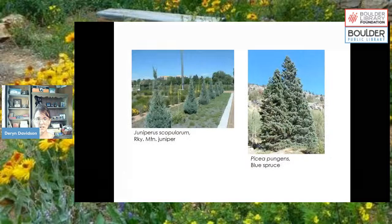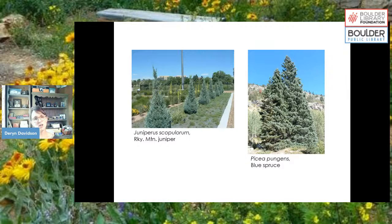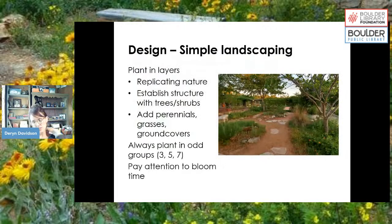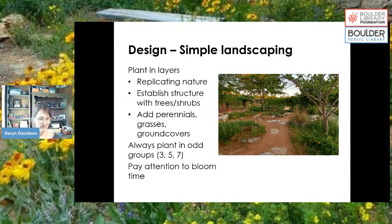For tree options, there's Rocky Mountain Juniper on the left and Colorado Blue Spruce on the right — our state tree. That's just a handful of plants; there are many more options. At the end I describe where to find resources on the CSU Extension publications page. If you go to CSU Extension and then Publications, you can choose native plants and find a bunch of different plant lists.